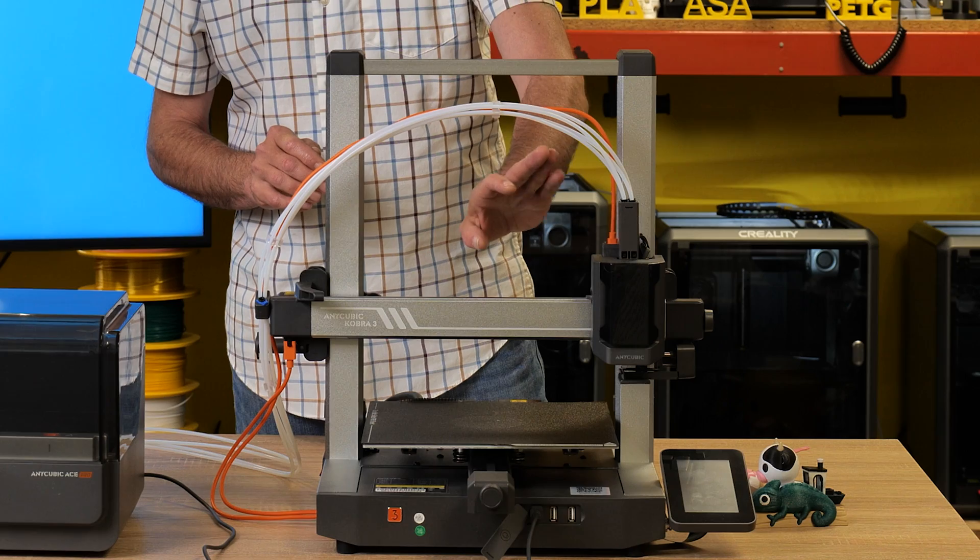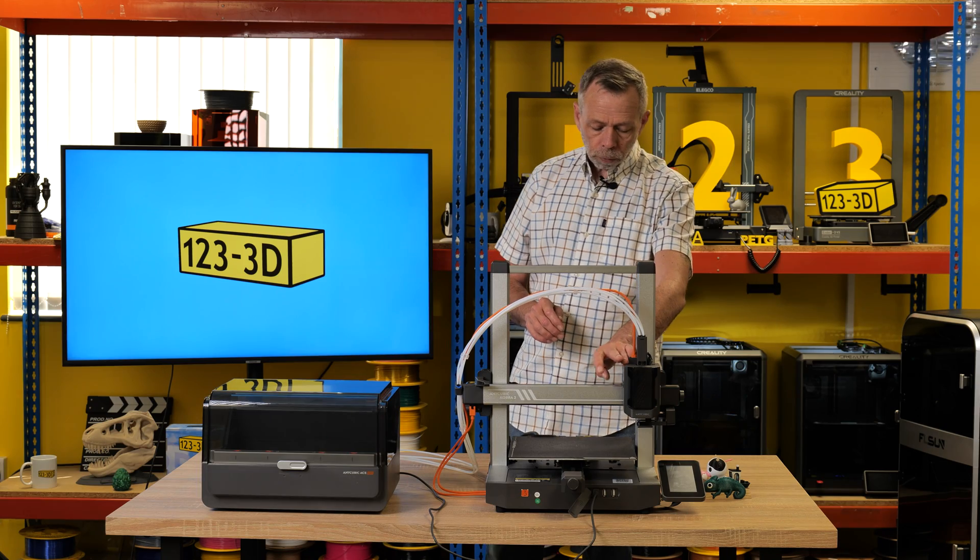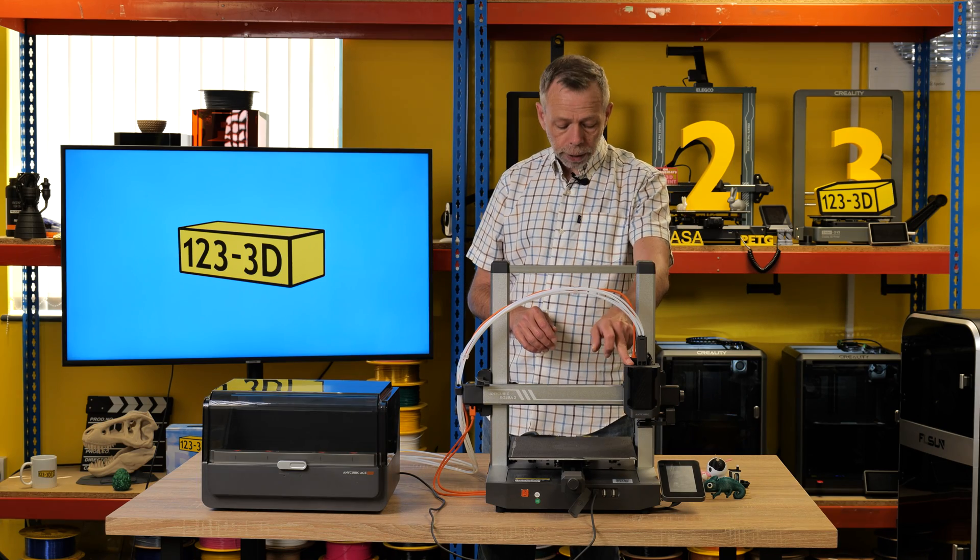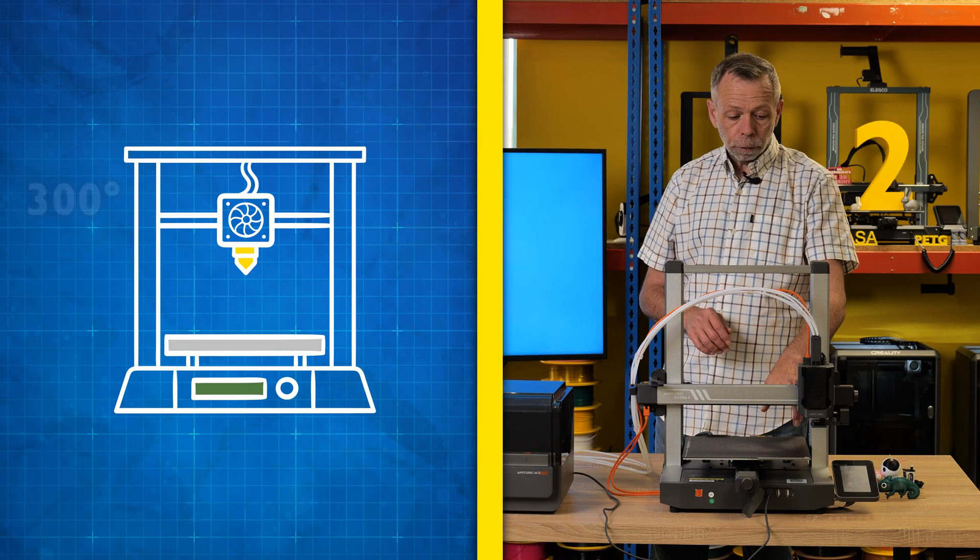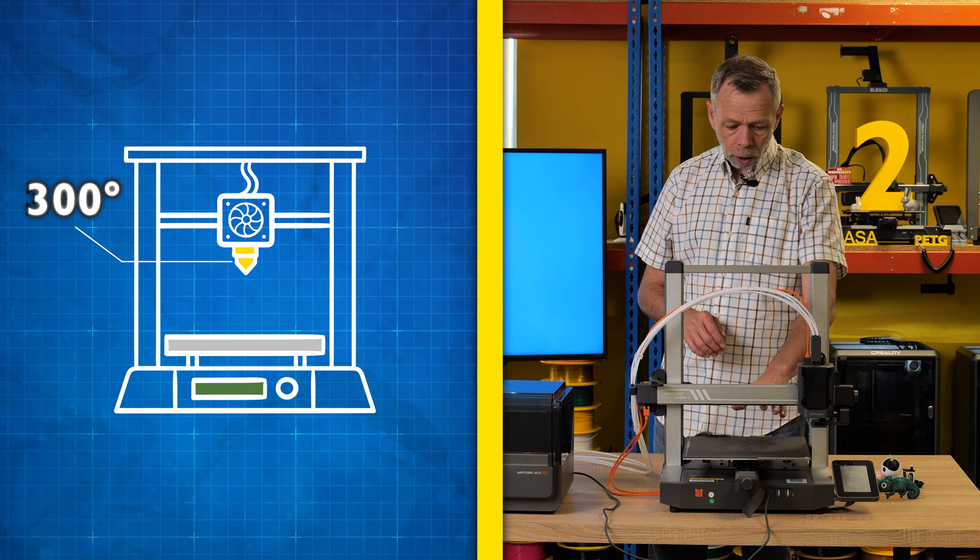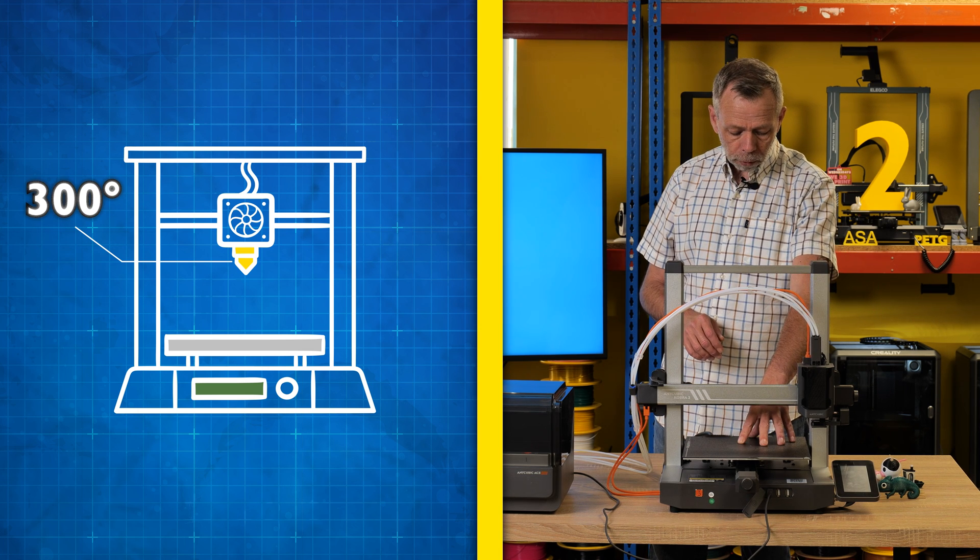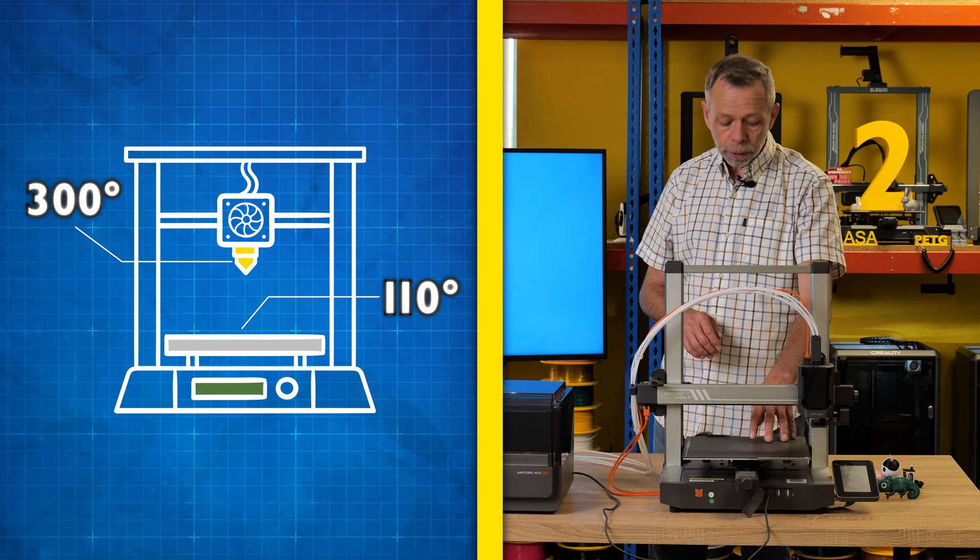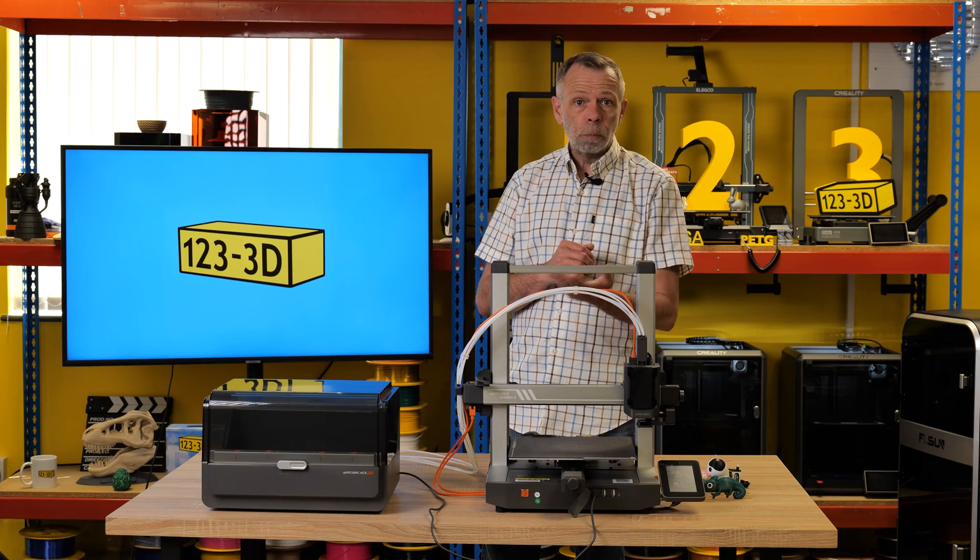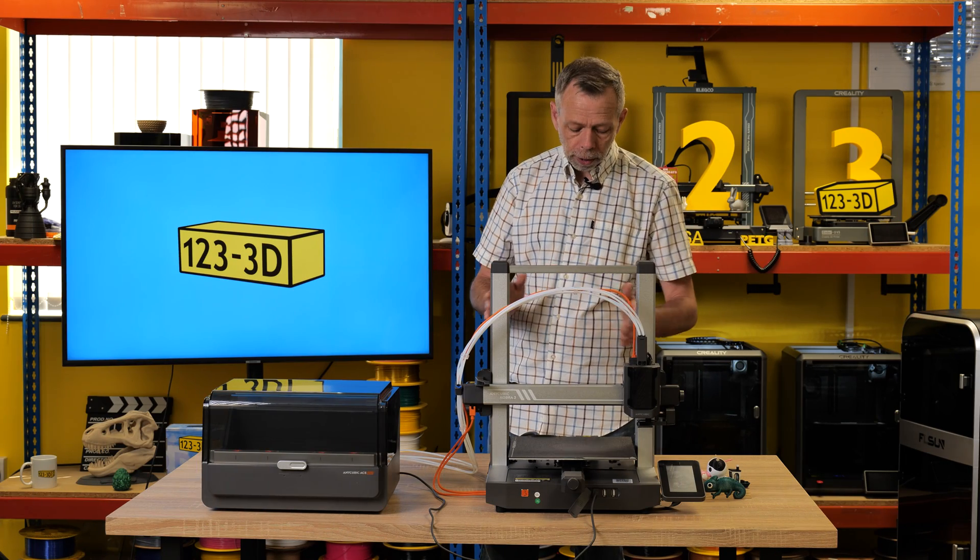The printer is equipped with an all-metal hotend. It also comes with hardened steel extruder gears. The hotend is capable of 300 degrees C maximum temperature, and the build plate is capable of heating to 110 degrees, which is absolutely fine for more exotic filaments like ABS and ASA.